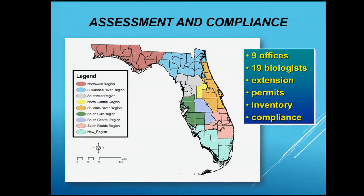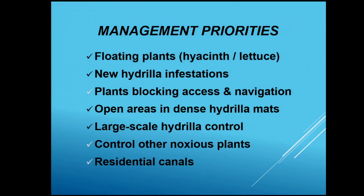These assessments are carried out by 19 biologists established in nine offices around the state. Florida has one lead agency — the invasive plant management program shifts about every 10 years from one agency to another, but there's always just one overarching lead agency for development of management programs statewide. Our management priorities are similar to California's draft programs: floating plants — water hyacinth and water lettuce — and then hydrilla or submersed plants. We don't have much Egeria in Florida.